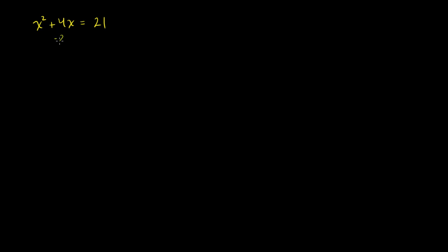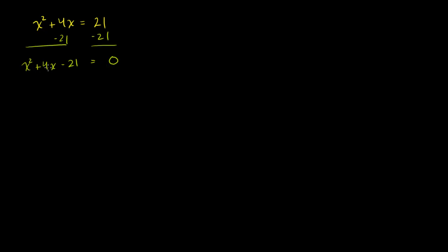So let's subtract 21 from both sides of this equation. The left-hand side then becomes x squared plus 4x minus 21, and the right-hand side will be equal to 0. This is a quadratic equation — we have a quadratic expression being set equal to 0. The way you want to solve this is to factor it and say each of those factors could then be equal to 0.